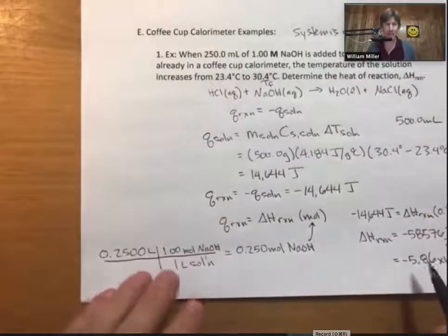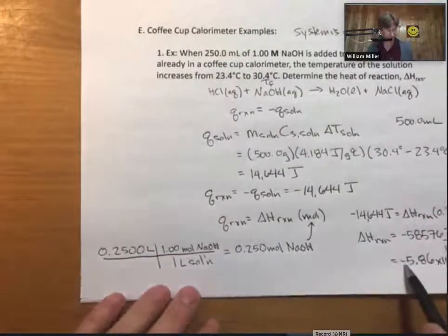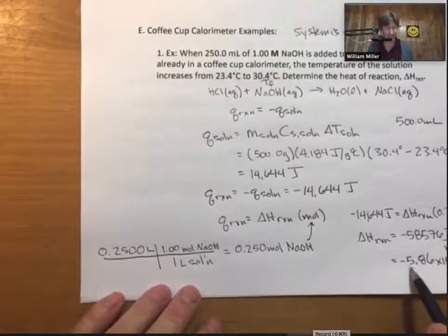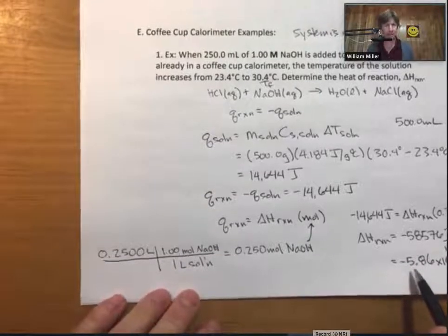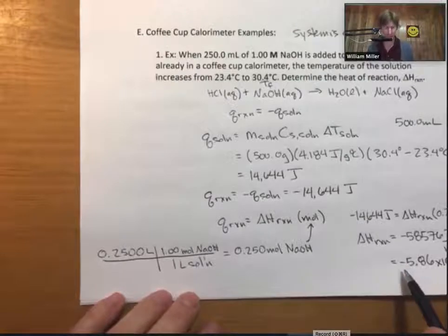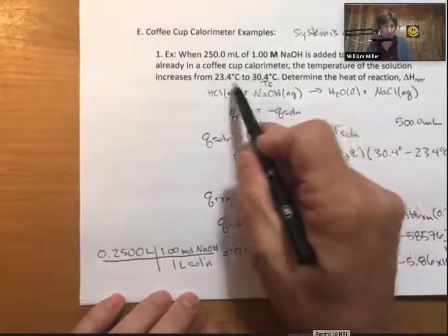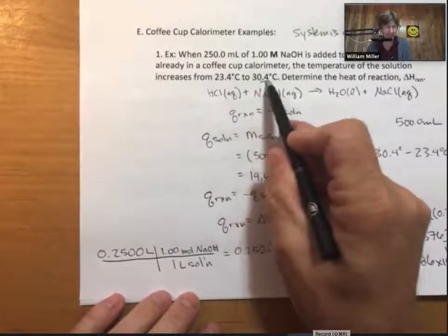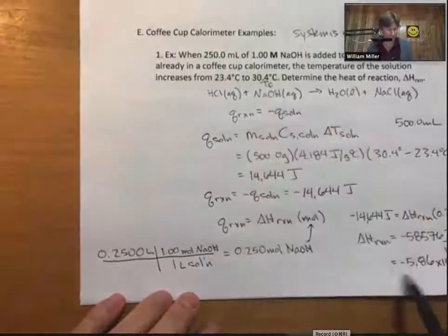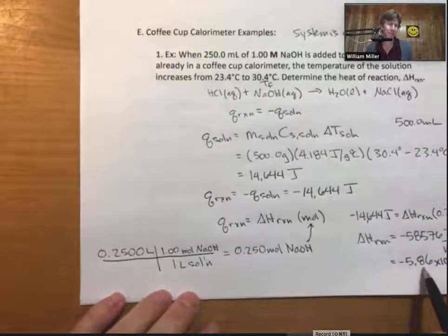One other thing to say: this delta H is negative because the reaction is exothermic. An exothermic reaction heats up the solution, so a positive temperature change for the solution means a negative value for delta H reaction.